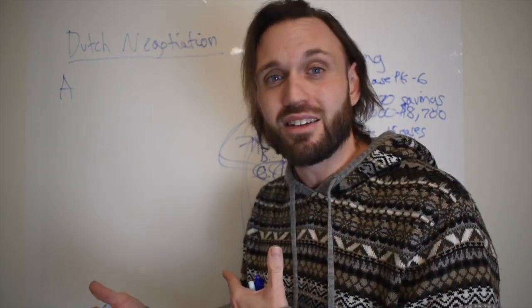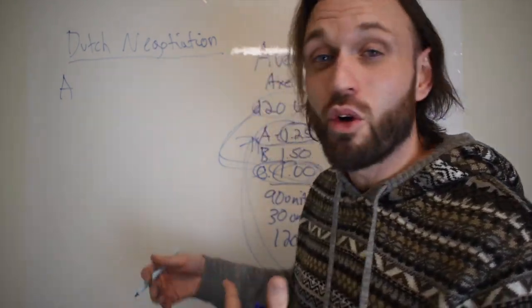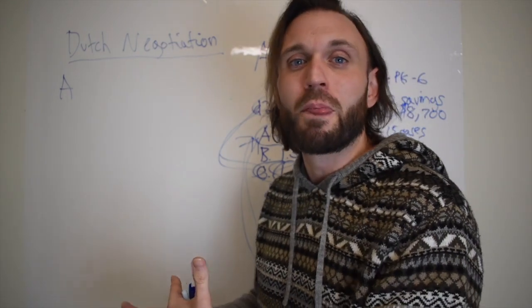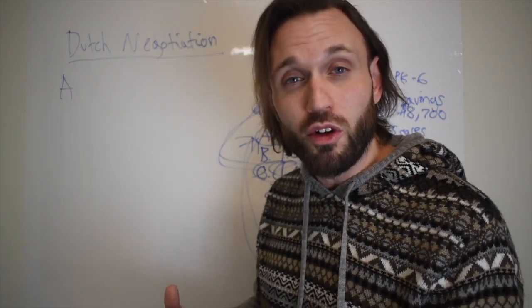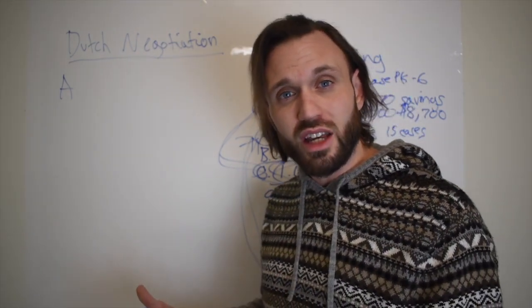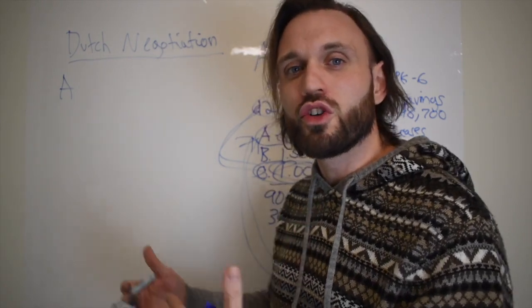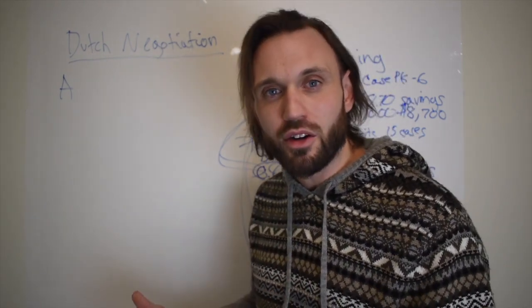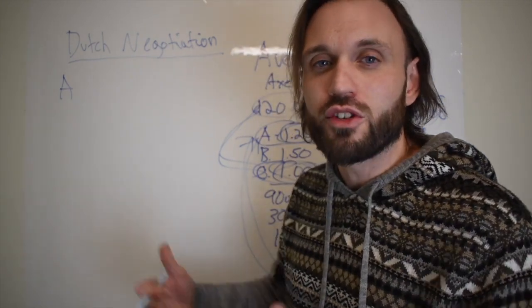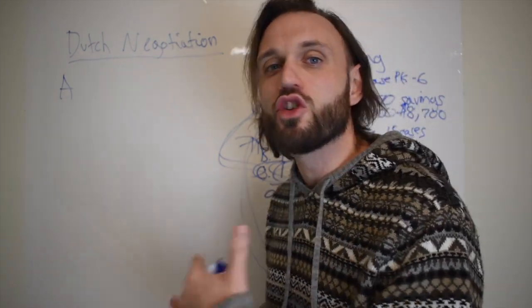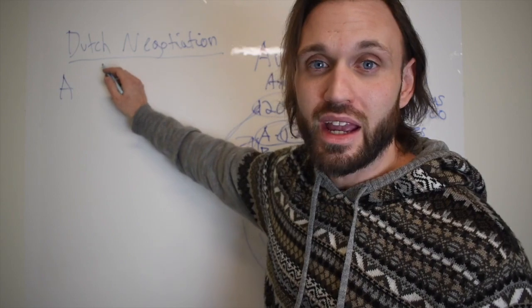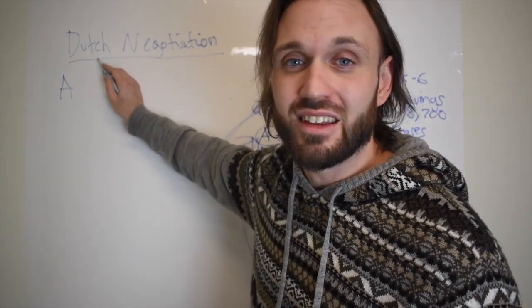So we're going to go with this example with either two smaller distributors in a local city who may be competitors, or two national distributors who are competitors and they know who each other are. It's important that the distributors know who they are in order to operate this Dutch negotiation precisely.